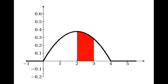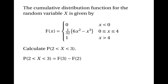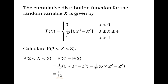Think about the graph of the probability density function. The probability that x is between 2 and 3 is the area under the graph between 2 and 3. One way to work that out is to find all the area up to 3 and then subtract the area up to 2 — the whole coloured area would be F of 3 and the yellow area would be F of 2. So the probability is F of 3 minus F of 2. F of 3 is 1 over 32 times 6 times 3 squared minus 3 cubed, and F of 2 is 1 over 32 times 6 times 2 squared minus 2 cubed. Working this out gives the answer 11 over 32.